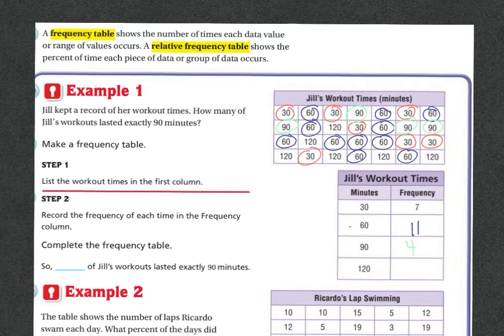It looks like 4 times she worked 90 minutes. And then finally, 120 minutes. 1, 2, 3, 4, 5, 6. 6 times she did 120 minutes. So if we're looking for exactly 90 minutes, that means I'm looking right here in this column. And in 90 minutes, she worked out 4 times. So 4 of Jill's workouts lasted exactly 90 minutes.